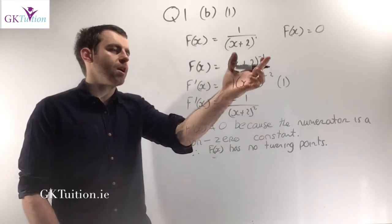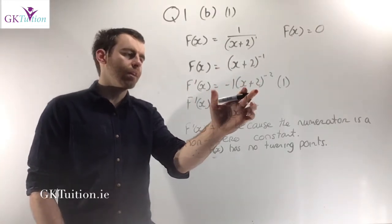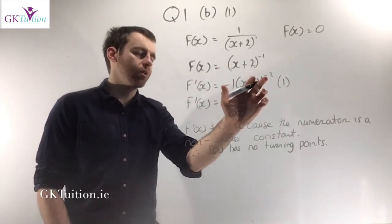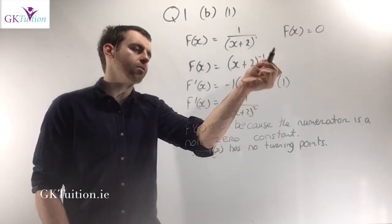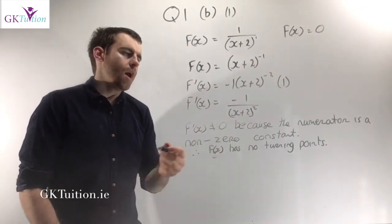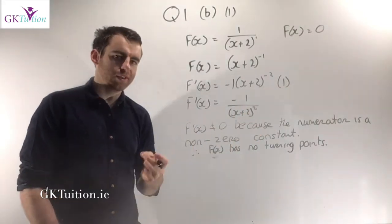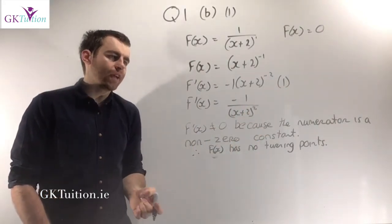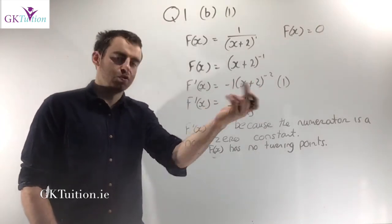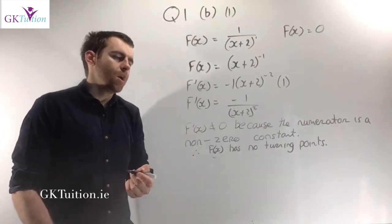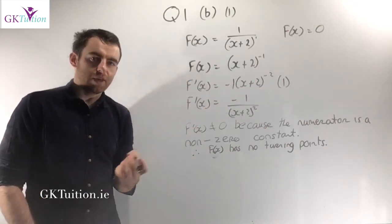To get f dash x, bring the minus 1 in front and rewrite the bracket, decreasing the power by 1 from minus 1 down to minus 2. Then multiply by the derivative of what's inside the bracket. The derivative of x plus 2 is just 1, so the derivative of x is just 1. Now I just need to prove this could never equal 0.